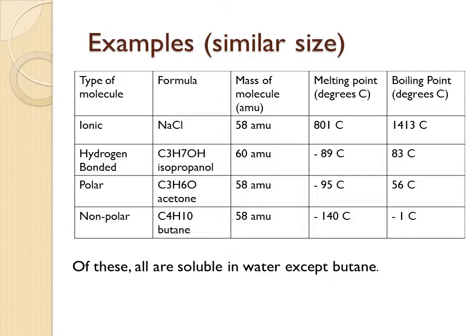Finally, butane: its melting point is very low, and even the boiling point is below room temperature — so by the time it reaches room temperature, butane is already a gas. Regarding water solubility, three of the four compounds are soluble in water: sodium chloride, isopropanol, and acetone are all soluble. But the nonpolar compound butane is not soluble in water.